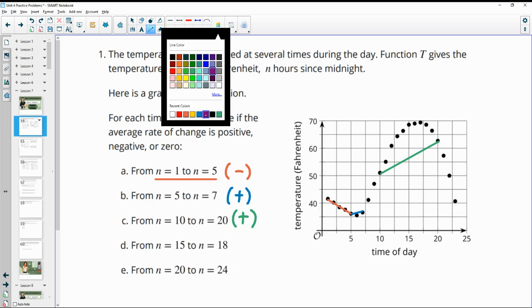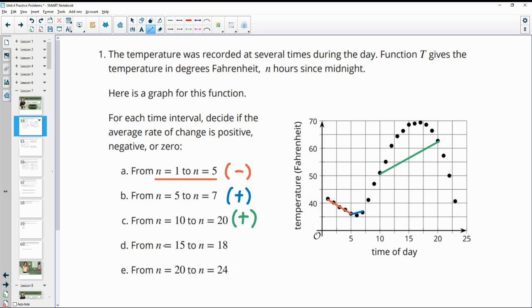Next one is from 15 to 18. So here's 15, go up and find a dot. And then 18, so this is 17.5. So 18 is going to be about here. This one appears to not be going up or down. It stays flat. So this one is going to be a zero rate of change.